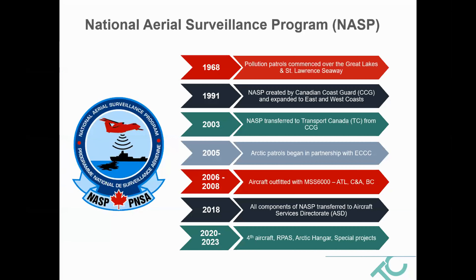A quick history of the program: pollution surveillance started in Canada in 1968 in the Great Lakes and the St. Lawrence Seaway. The NASP was officially created in the Canadian Coast Guard in 1991, so 2021 is our 30th anniversary. In 2003, the NASP was transferred from Coast Guard to Transport Canada. Up until 2006, all of our patrols were done visually — pilots with cameras flying at low-level visual conditions. Between 2006 and 2008, the program acquired a maritime surveillance system for each of its aircraft, the MSS 6000. Up until 2018, the NASP was actually operated by three different departments: Transport Canada Marine, Environment Canada, and Transport Canada Aircraft Services. But in 2018, we were all moved into Transport Canada Aircraft Services.